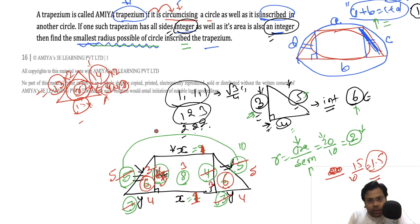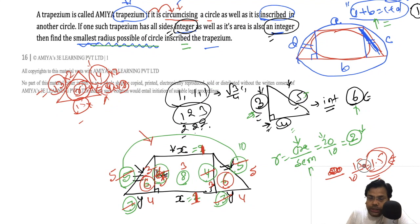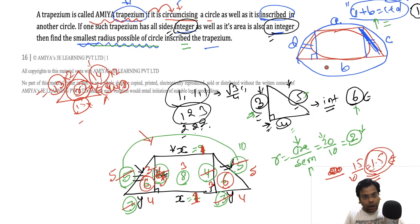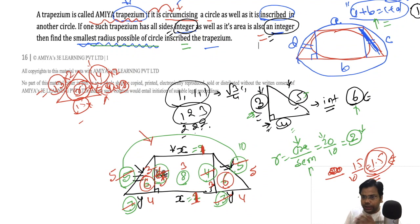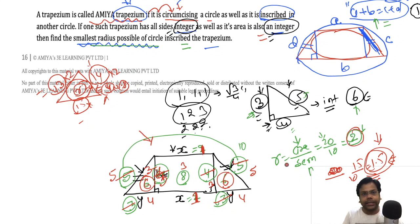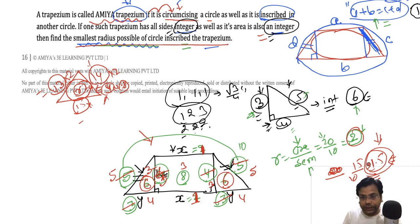So the answer to this question is 1.5 — that is the smallest radius of a trapezium where one circle is inside, one circle is outside, all sides are integers, and the area is also integer. You cannot get a smaller value by adjusting further. And please note — I never defined the radius as an integer, so the answer is 1.5, not 2.